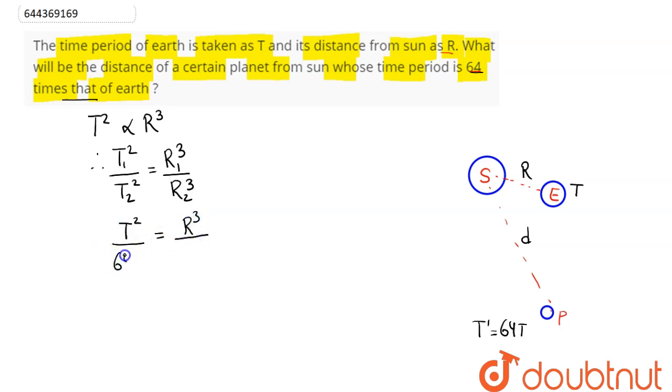T₂ here is 64T, so this is (64T)² and R₂ here is d which we need to find out. Hence T² cancels out, so d³ comes out as R³ into